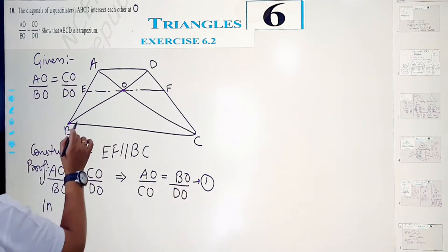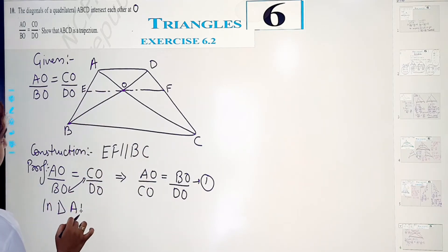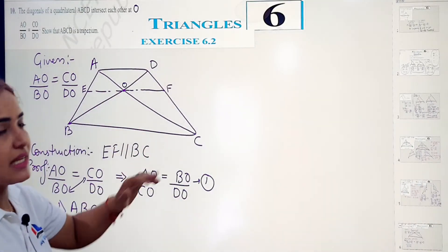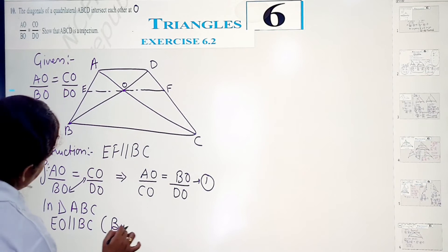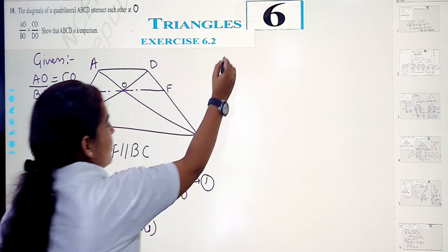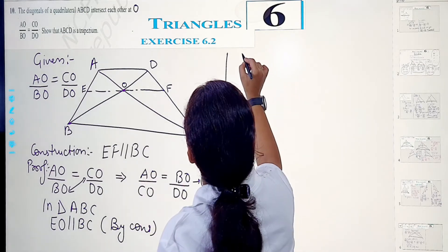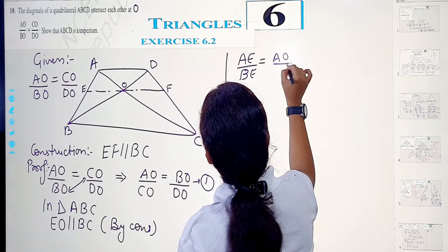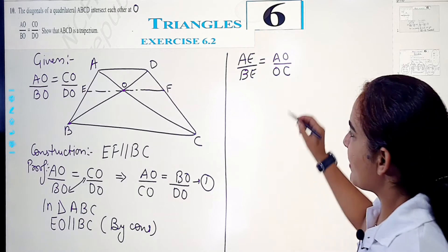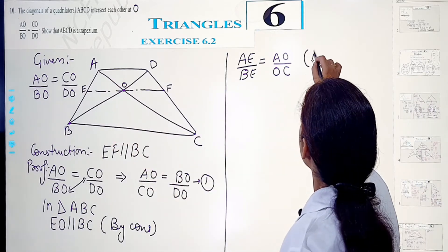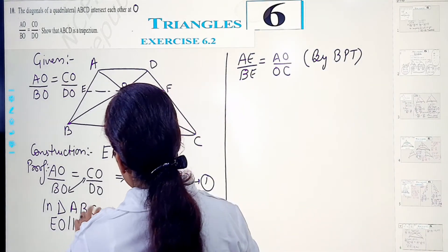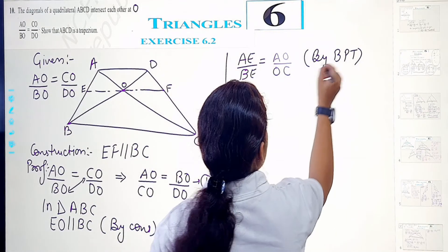Now in triangle ABC, EO is parallel to BC by construction. So by the Basic Proportionality Theorem (BPT), AE/BE = AO/OC. And since AO/OC = BO/OD from equation 1, this becomes equation number 2.